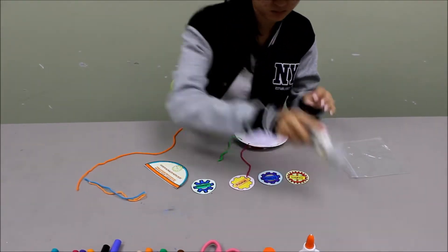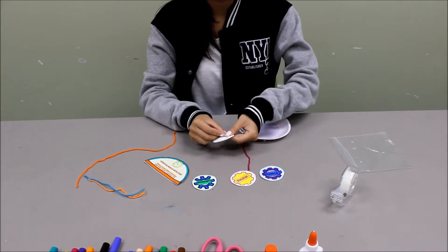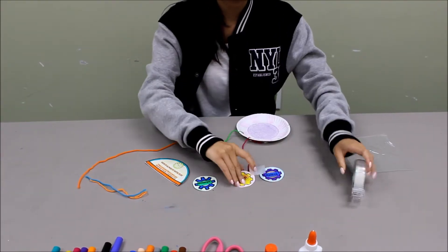And when they're done with that, they can glue on the gear to the tip of the strings, the yarns, for all four of them.